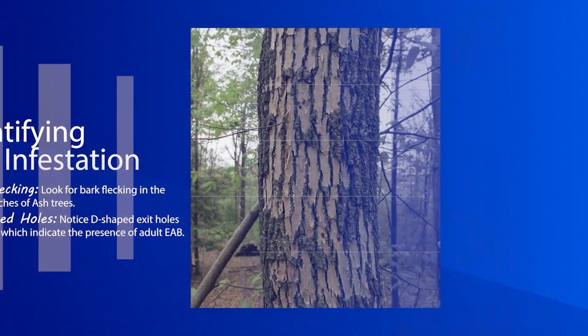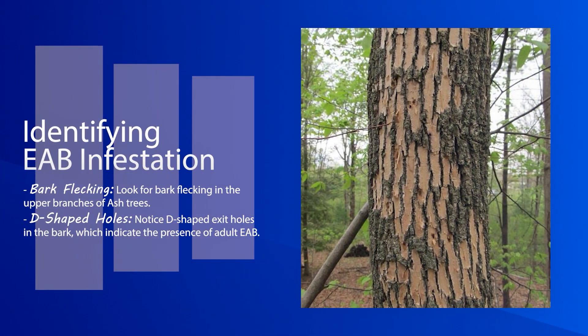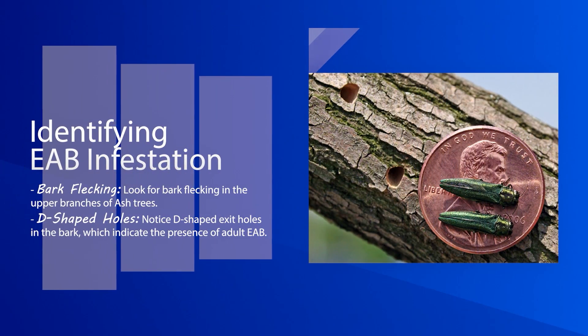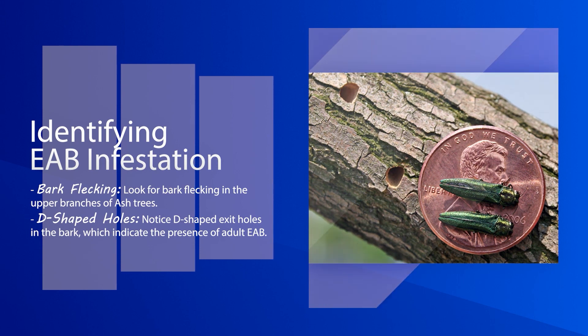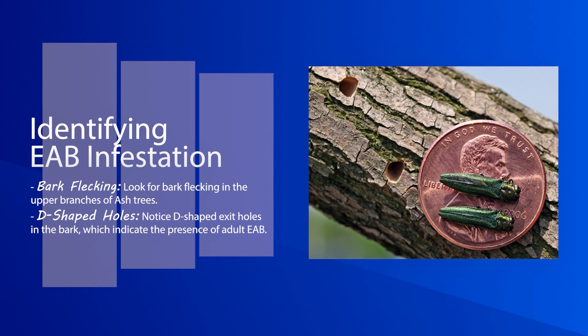To identify EAB infestation, look for bark flecking, or look for D-shaped holes in the bark, which indicates the presence of adult EAB.